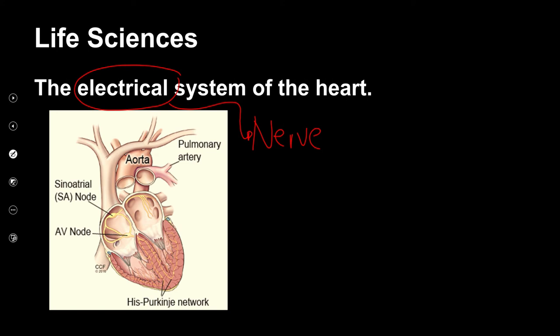So when my heart stops beating — do you see sometimes they put those paddles on? What are they putting through? Electricity. And that electricity gets the heart going. At the top of the heart, you've got a little bundle of nerves called the SA node. Another word for it is pacemaker.